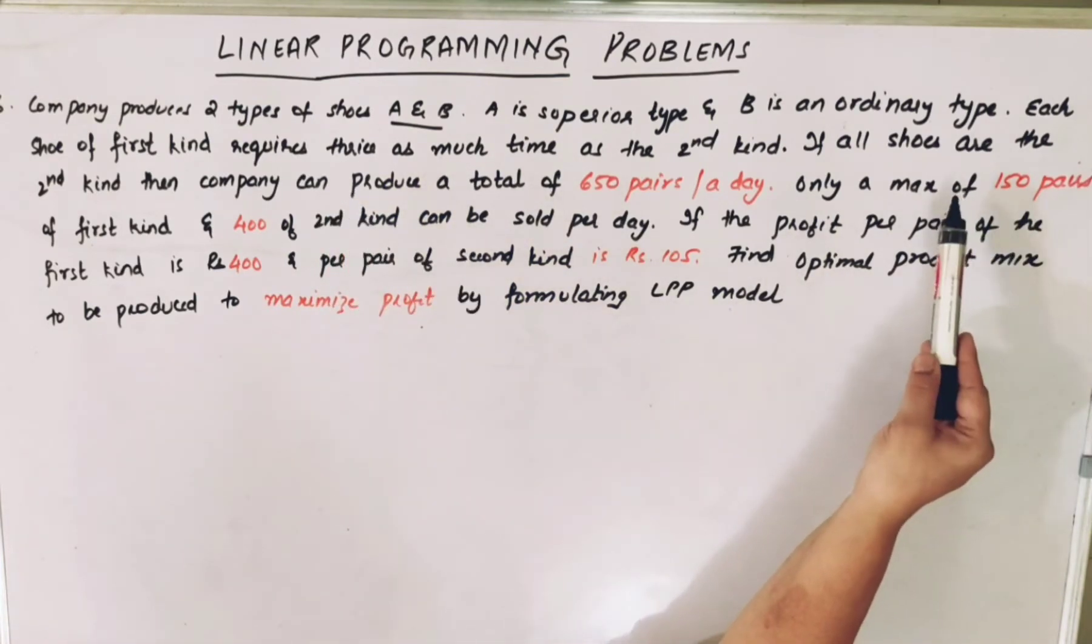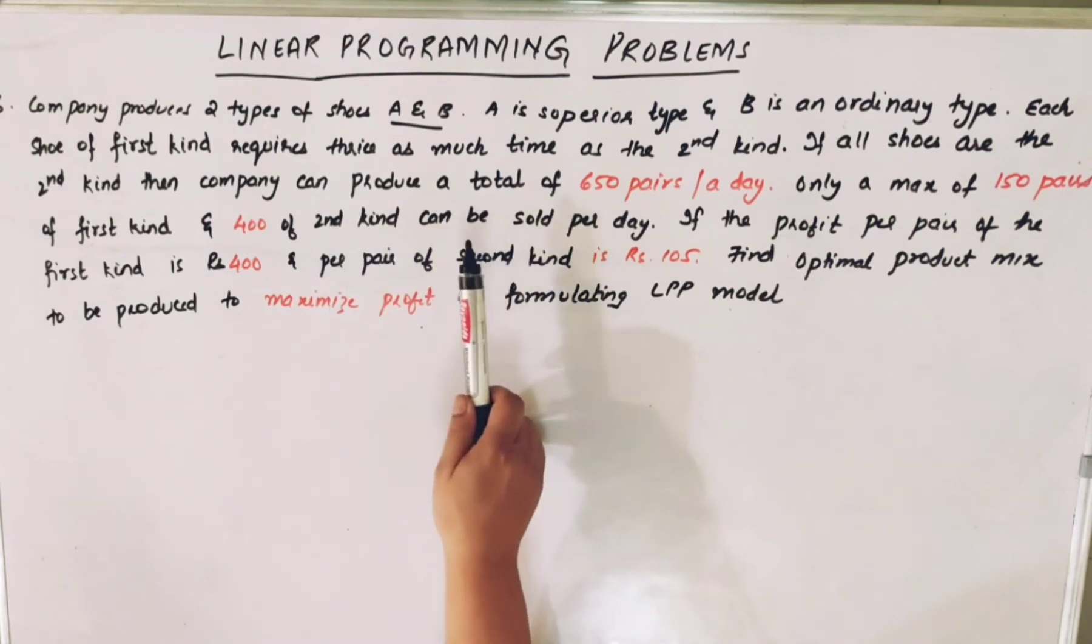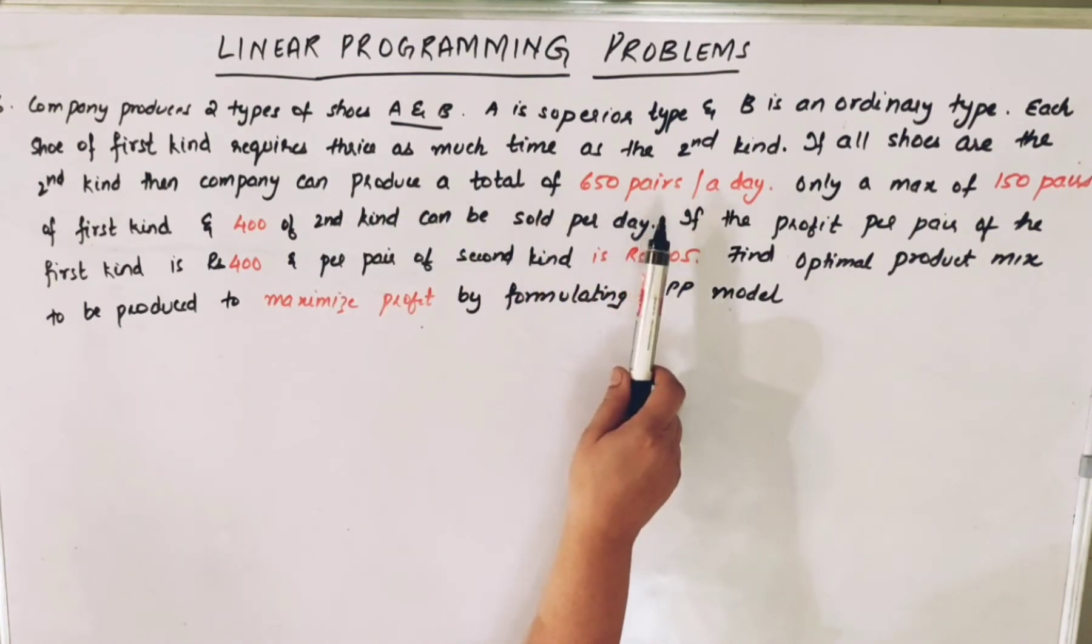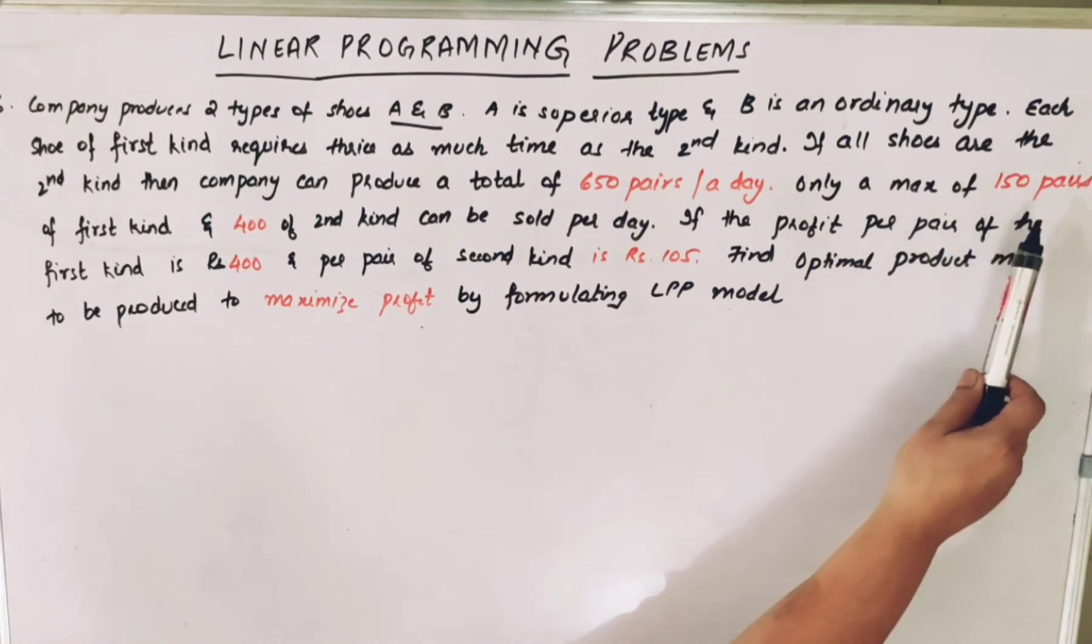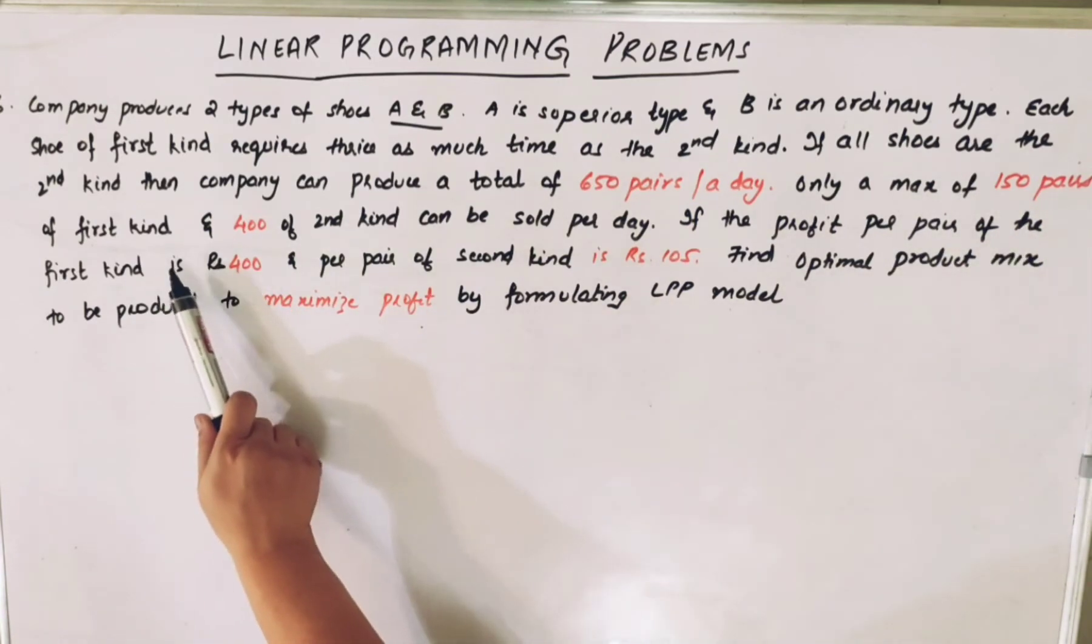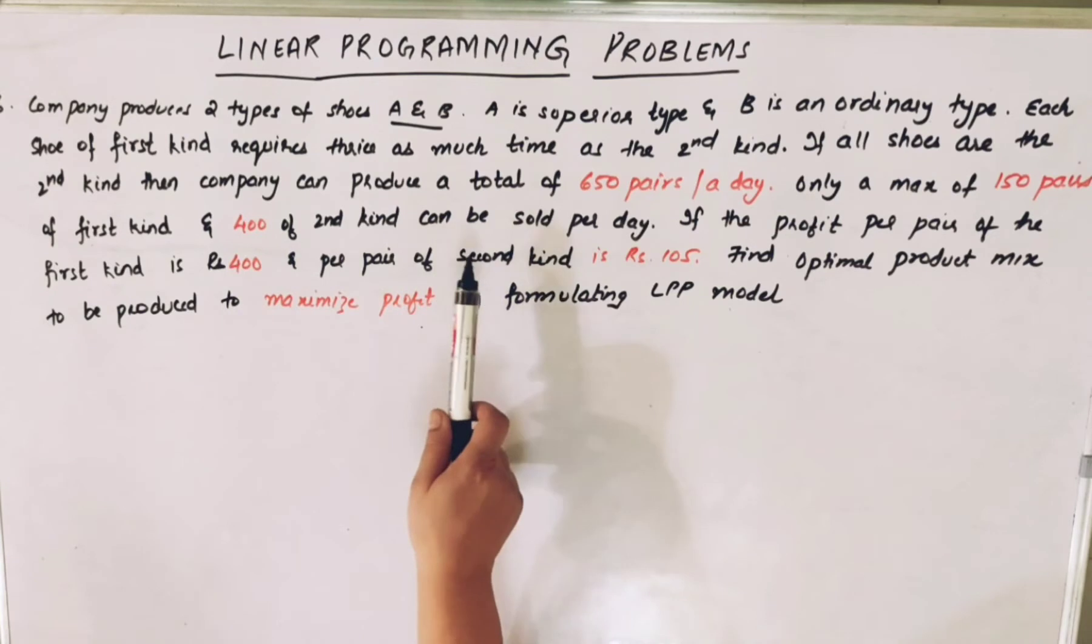There are other parameters given here. The maximum number of shoes that the company can produce is 650 pairs per day, and maximum of 150 pairs of the first kind and 400 of the second kind.